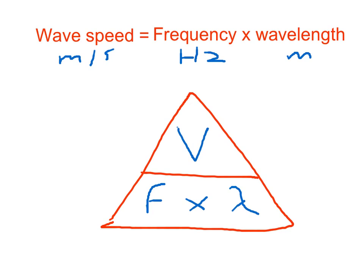Now that we understand transverse waves and longitudinal waves, we can look at something called the wave equation. The wave equation takes in three pieces of information: wave speed, frequency, and wavelength. To calculate wave speed we multiply frequency by wavelength. It is also possible to work out wavelength if we have wave speed and frequency.